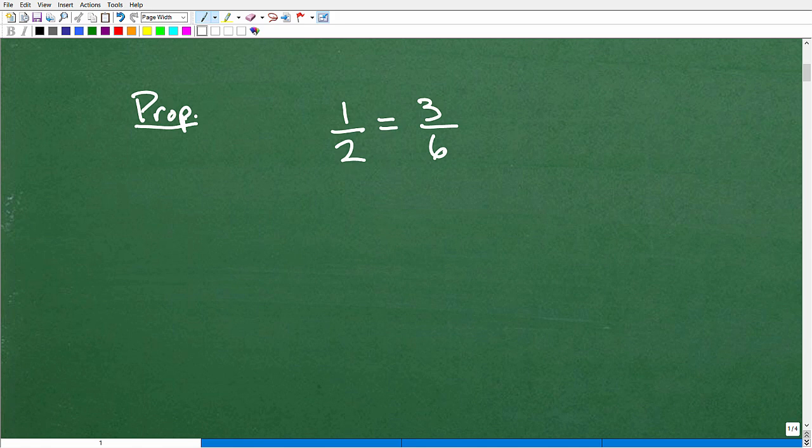So a proportion, again, nothing more than two or more equal fractions. Now, other fractions that are equal to 1 half could be like, say, 5 tenths, etc. But let's just stick to two fractions that are equal by definition. That is a proportion.